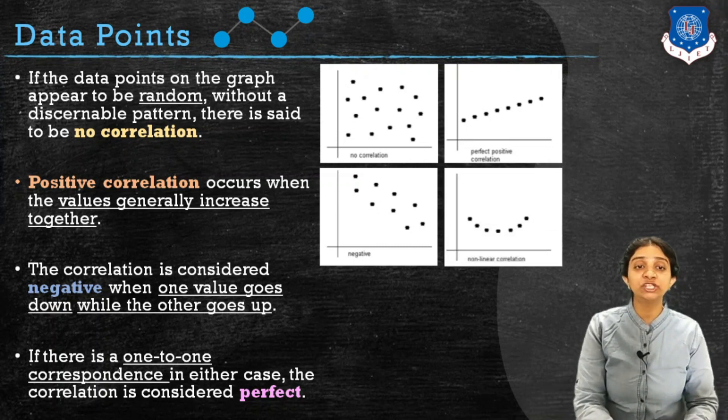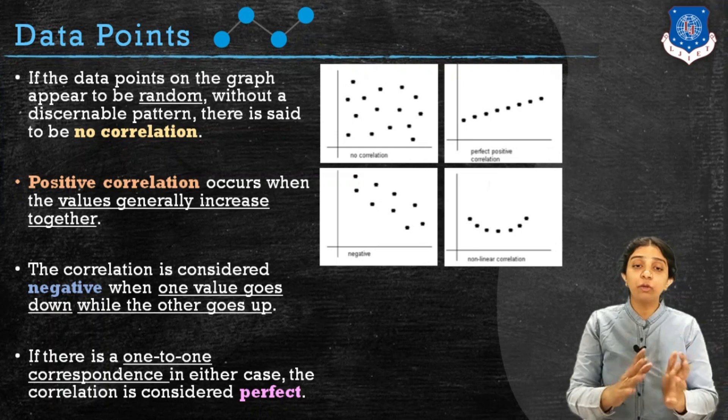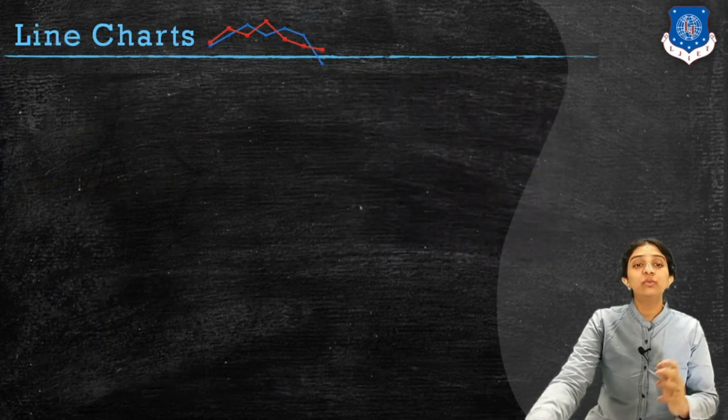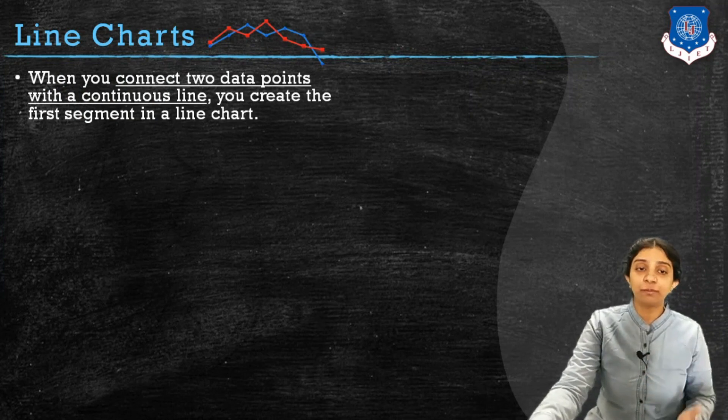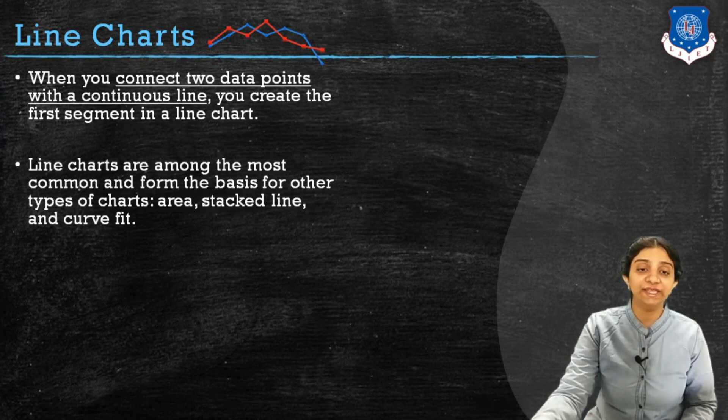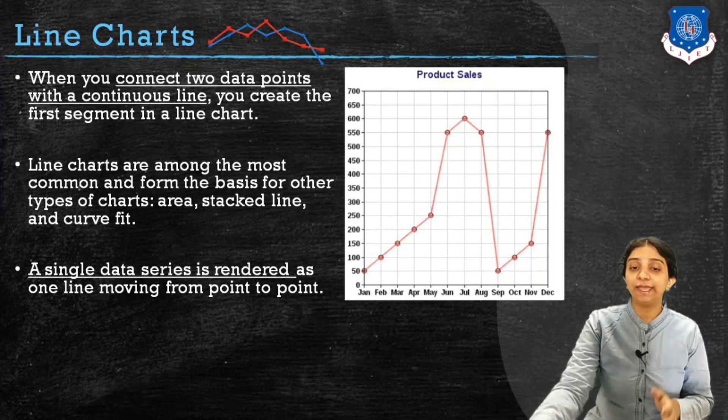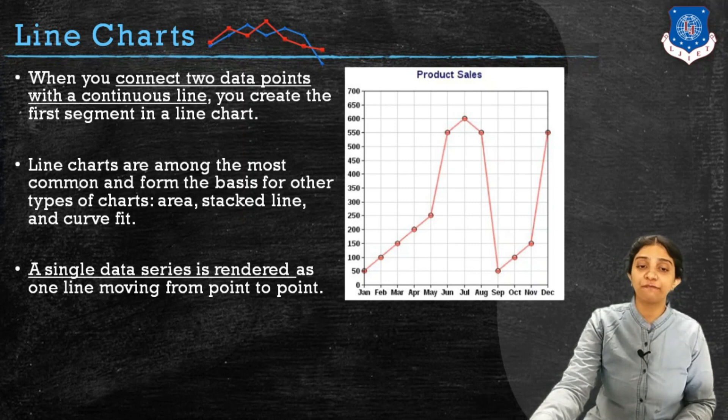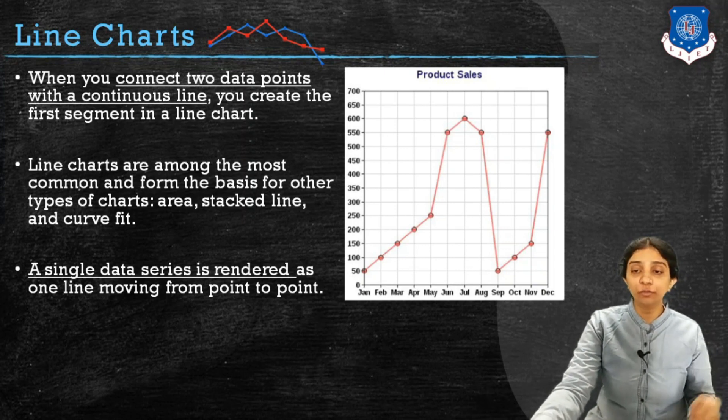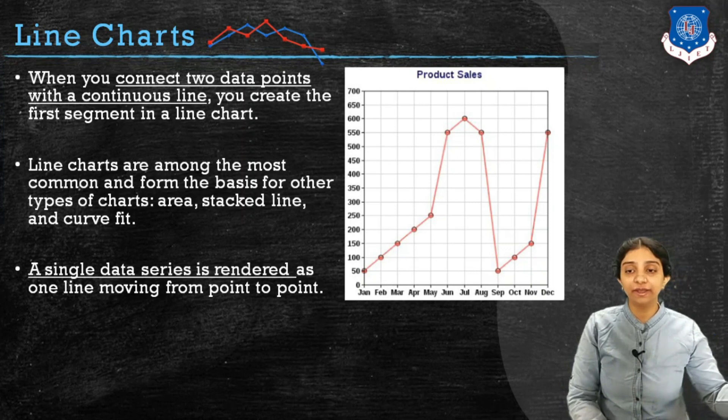There do exist some other types of correlation which are non-linear or may take some curvature or arc-like form. We call those kinds of correlation non-linear correlation. Now, what is a line chart? When you connect two data points to make a continuous line over your chart, you have one segment in a line chart. Line chart is the most common form and is the basis for other chart types like area charts and stacked line charts. A single data series is rendered as one line moving from point to point.